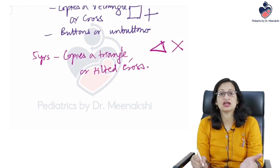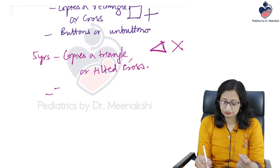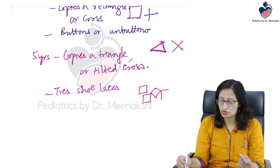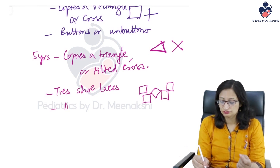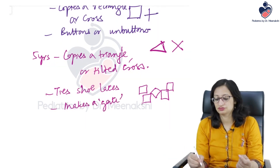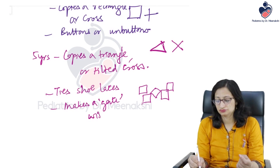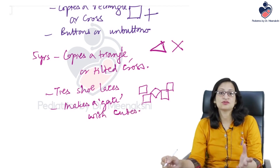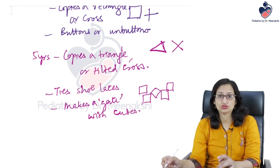At five years, the child copies a triangle or a tilted cross (multiplication sign), ties shoelaces, and can make a gate or door shape using five blocks or cubes.